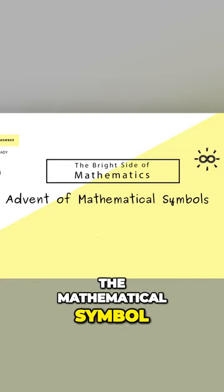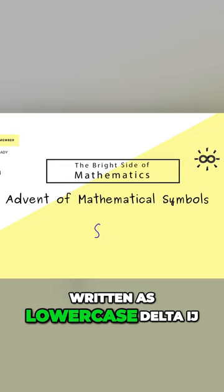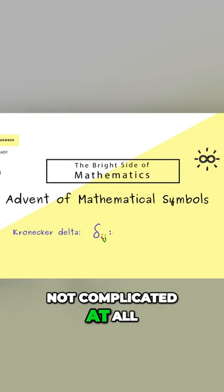The mathematical symbol of today is the Kronecker delta, written as lowercase delta_ij. The definition is not complicated at all. It's either 1 or 0.